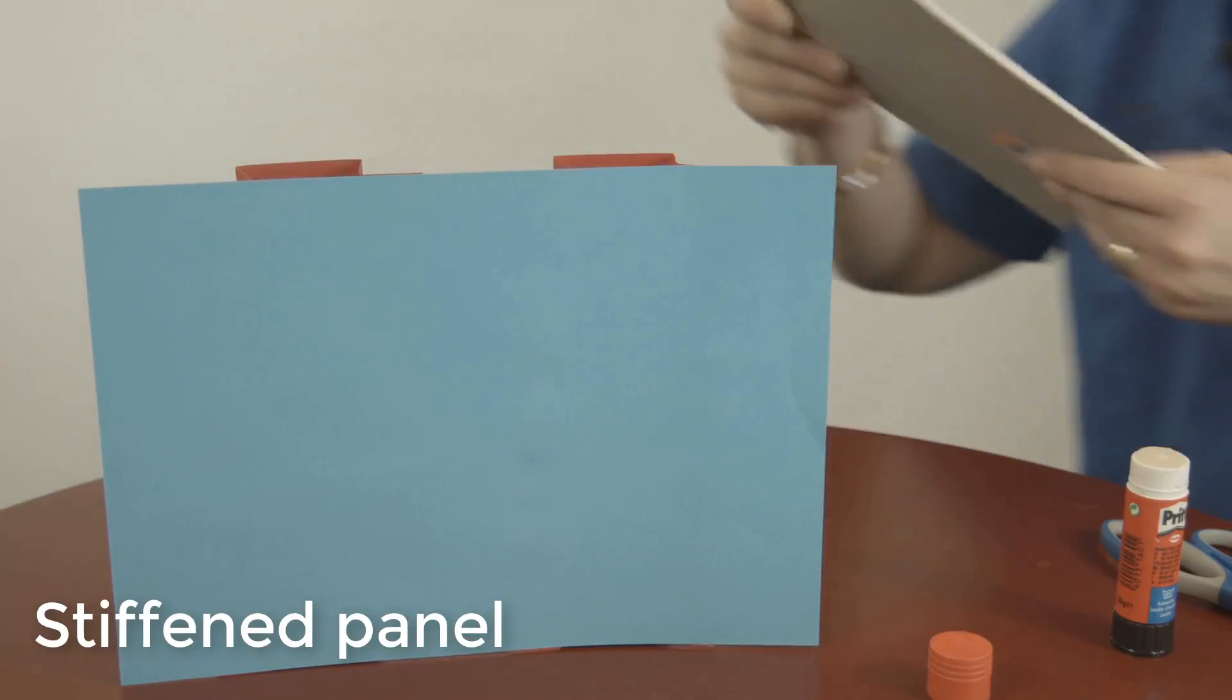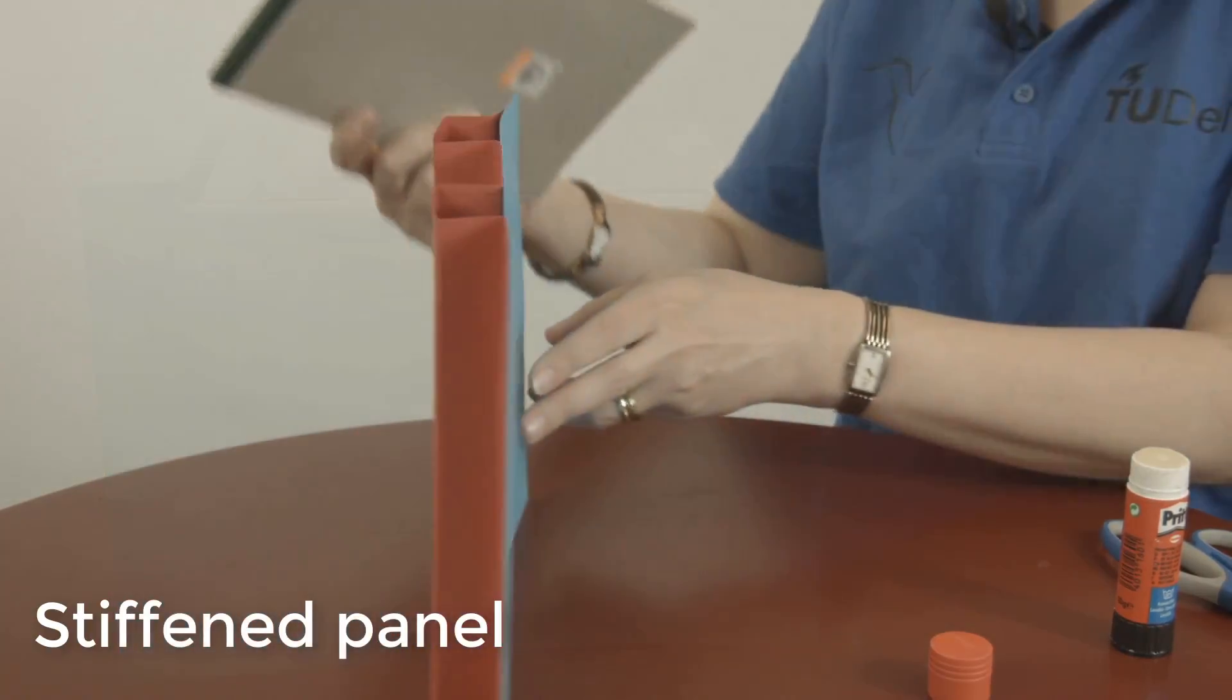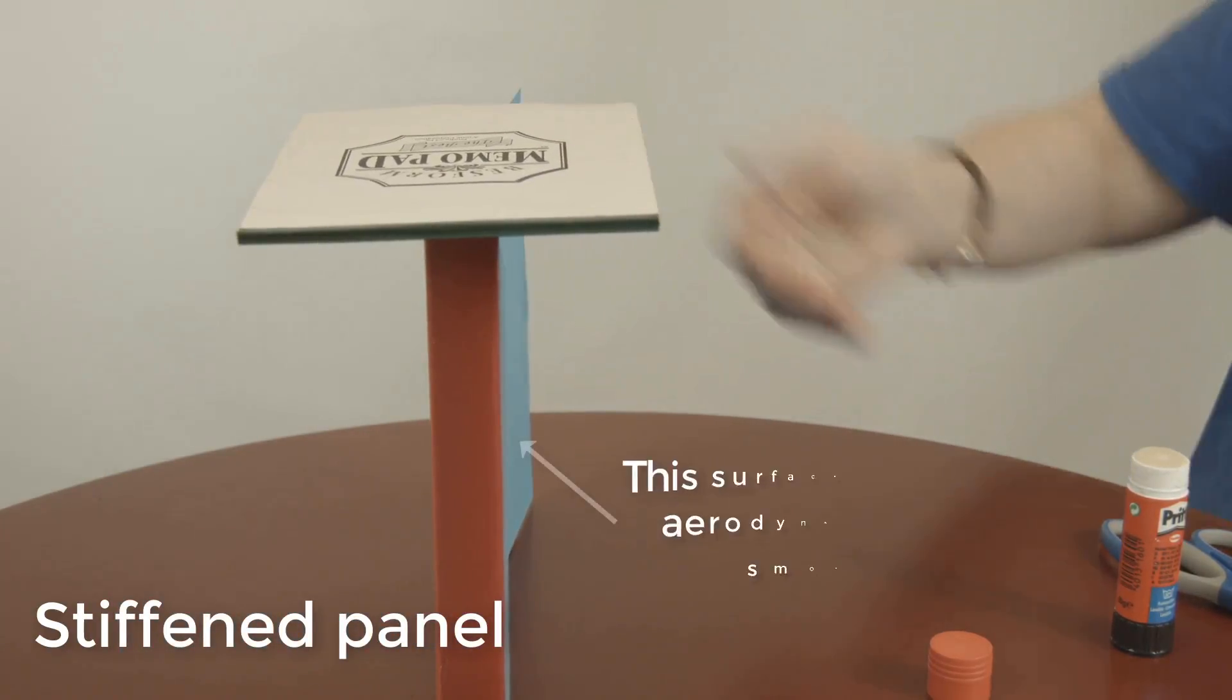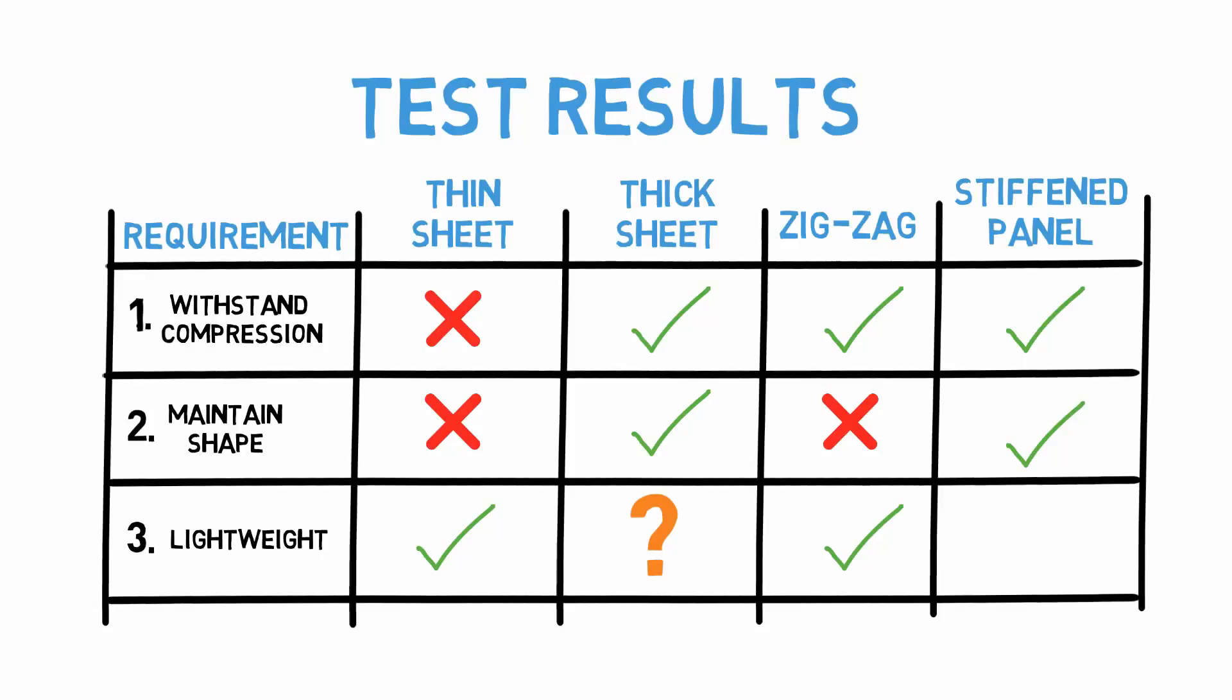Now let's evaluate our design. It meets the first requirement, that it withstands compression. It also meets the second requirement, because it does hold its shape, and if the stiffeners are placed on the inside of the structure, the outer surface remains smooth. And finally, it is a lightweight solution. There are only enough stiffeners to take the load. It is certainly lighter than both the thicker cardboard and zigzag folded options.